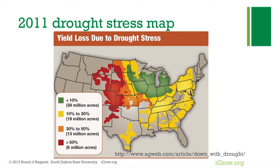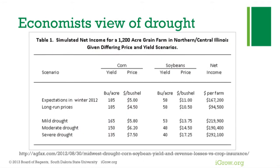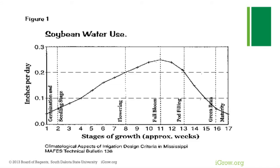This drought response map is an economist's view of drought. Looking at mild, moderate, and severe drought on a 100,000 to 200,000 acre grain farm, you get less yield. But if you do get some yield, you can see what kinds of economic responses you might get if other places have severe drought and you have a fairly good crop.